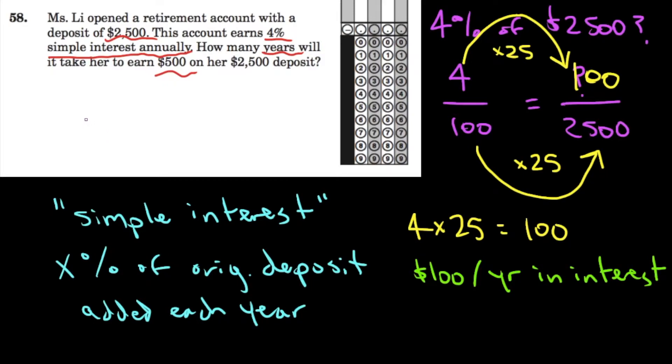Okay. It asks us how many years will it take her to earn $500? So if she earns $100 per year in interest to earn $500, it will take her five years. And that's our answer.